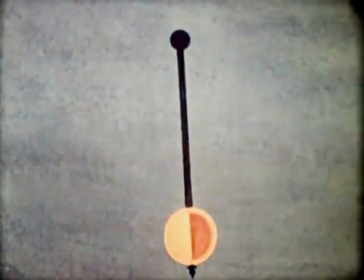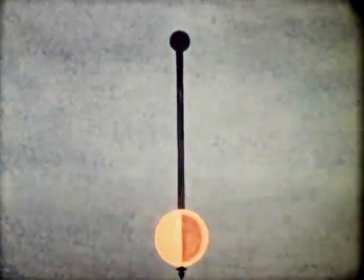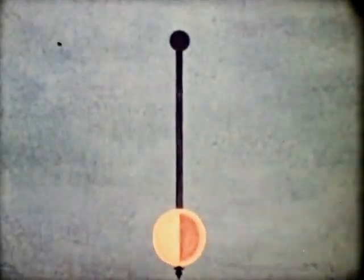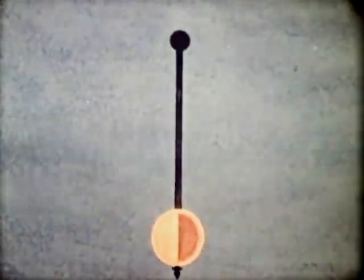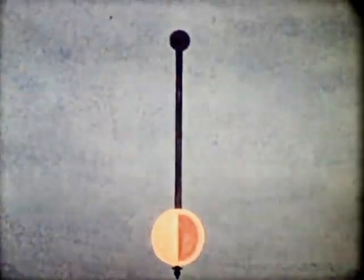When a pendulum such as this moves to and fro once per second, its frequency is said to be one cycle per second. It remains one cycle per second until finally the motion dies out, mainly due to friction losses.